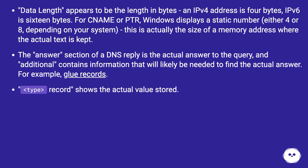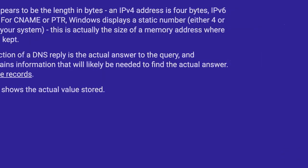This is actually the size of a memory address where the actual text is kept. The answer section of a DNS reply is the actual answer to the query, and additional contains information that will likely be needed to find the actual answer — for example, glue records. Record shows the actual value stored.